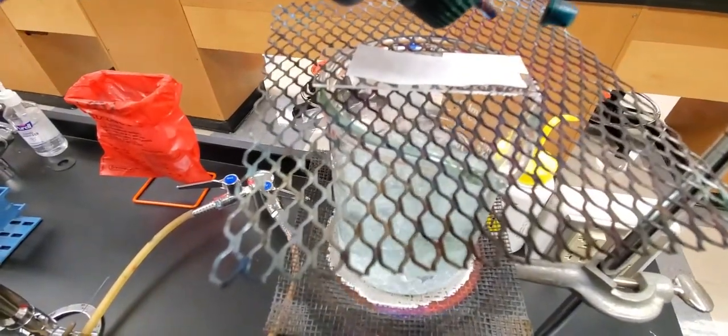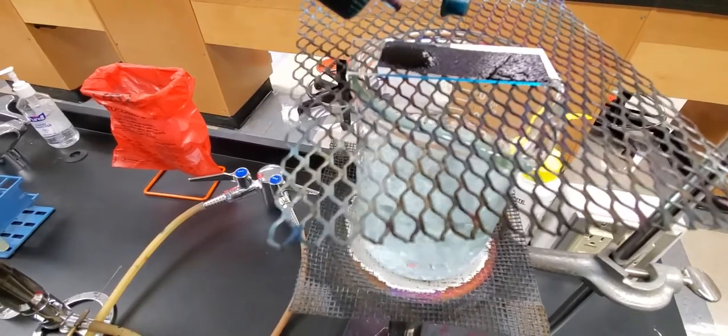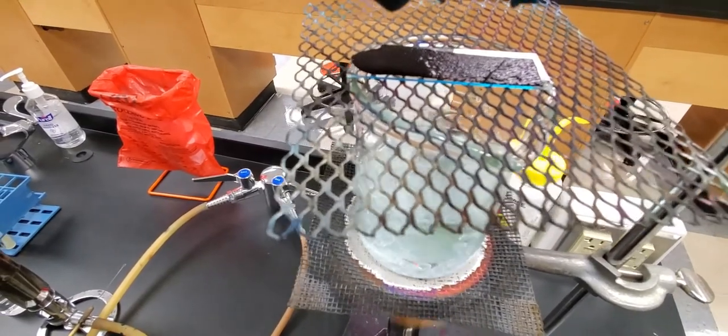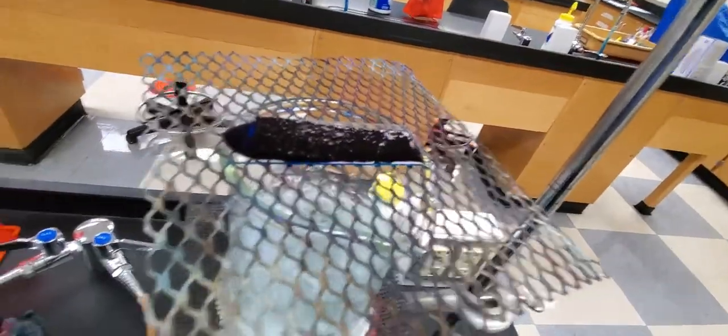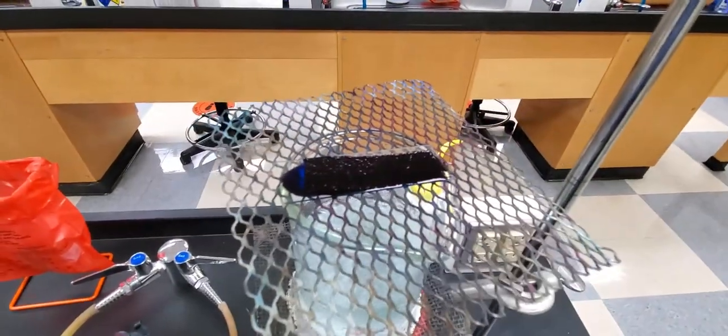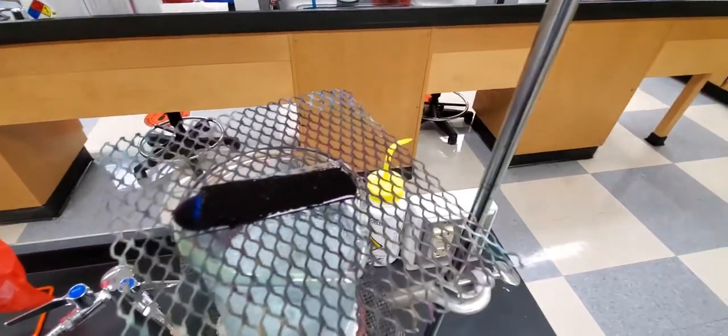This is just going to be there to help keep the stain from traveling too far off the slide, and it's also going to hold it down on the surface. We'll let it sit here for a good five to ten minutes, and that will give a chance for the stain to actually penetrate into the spore coating.